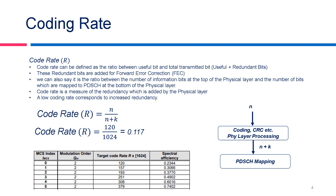The second property of modulation and coding scheme is code rate, or coding rate. Code rate can be defined as the ratio between useful bits and total transmitted bits, where total transmitted bits equals useful bits plus redundant bits. These redundant bits are added at the physical layer for forward error correction. In other words, the code rate is the ratio between the number of bits at the top of the physical layer and the number of bits which are actually transmitted or mapped to the PDSCH channel at the bottom of the physical layer.